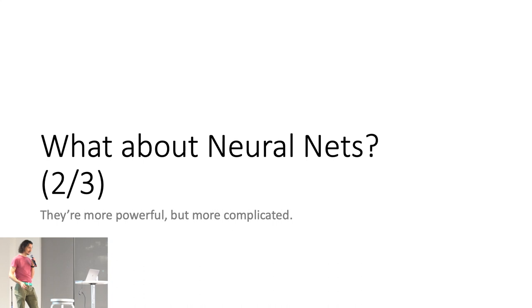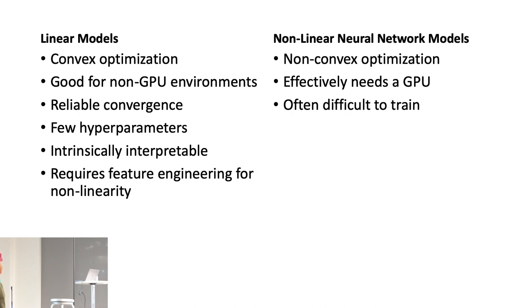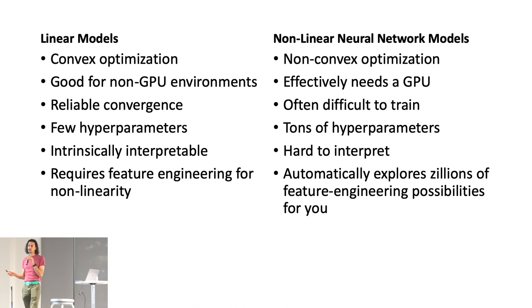What about neural networks? In contrast, neural networks have non-convex optimization. You don't have these nice, smooth surfaces. You really need a GPU to do anything. They're often quite difficult to train because they have tons of different hyperparameters, knobs that you can tweak to change the training process. If you don't get them pretty good, you're going to get a really bad model. They're super hard to interpret, kind of notoriously so. But on the plus side, they automatically explore tons and tons of different options for how the data might be interacting, and this leads to amazing results.